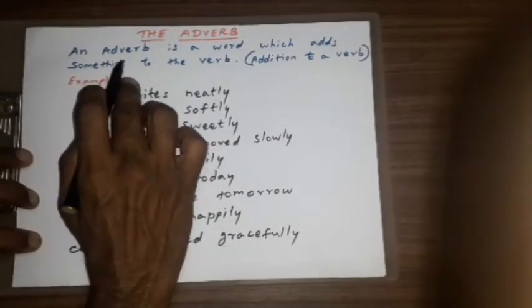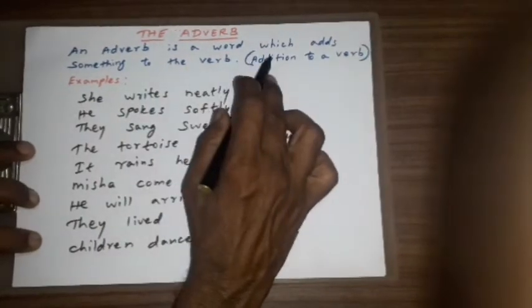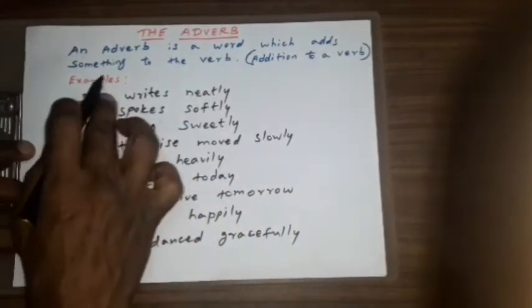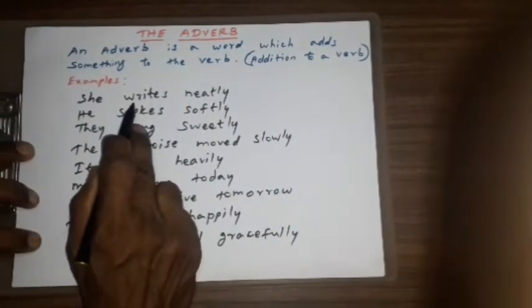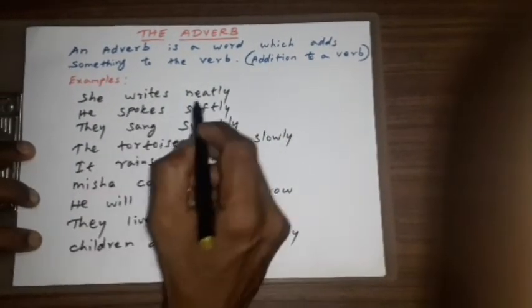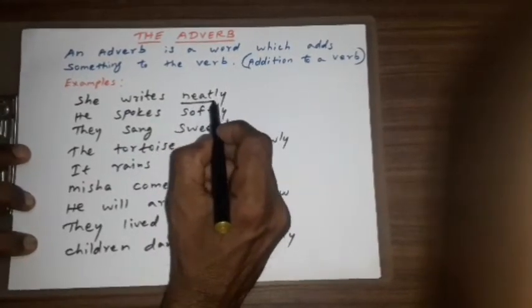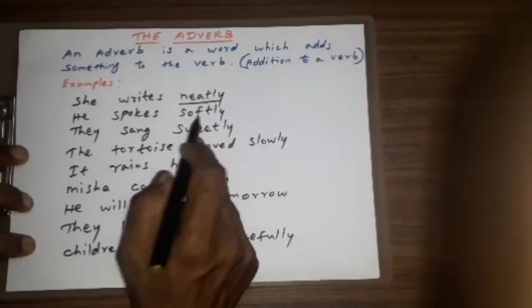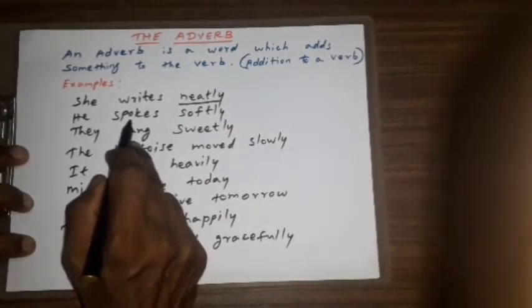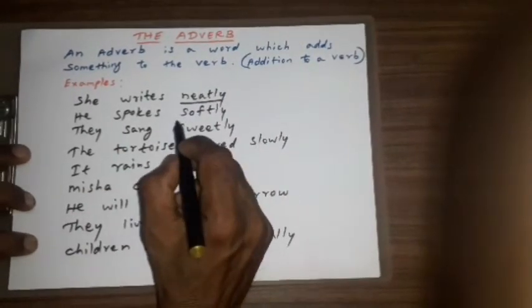An adverb is a word which adds something to the word, an addition to a word. Write is a verb. Addition neatly. This is an adverb. He spoke softly. Spoke is a verb. Addition softly. This is an adverb.